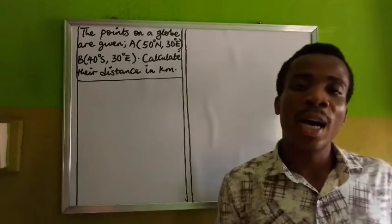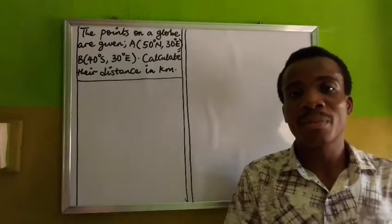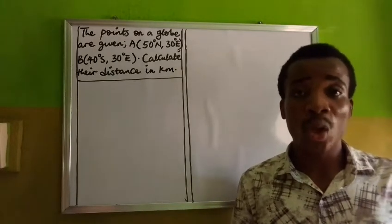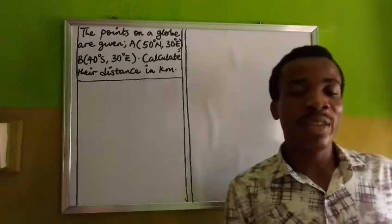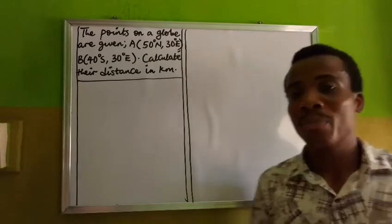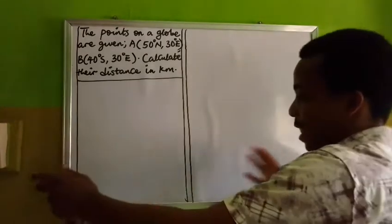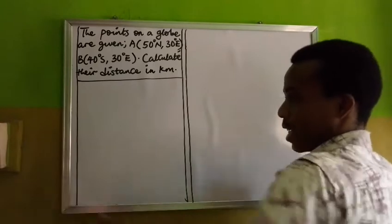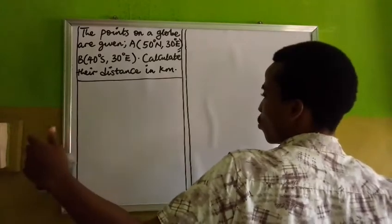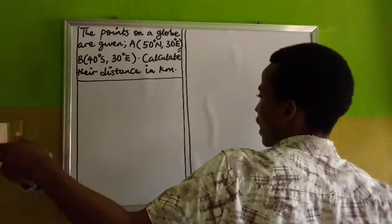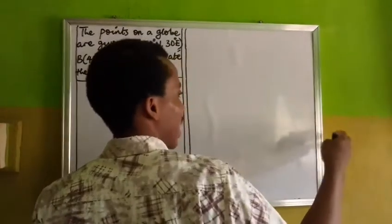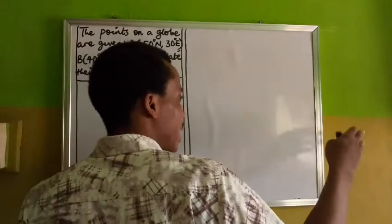Then we have what we call longitude, which are vertical lines. The main longitude is called the Greenwich Meridian. That Greenwich Meridian divides the circle vertically into two parts, which are the western and the eastern sides. Every longitude you see at the left-hand side is a west longitude, while every longitude you see at the right-hand side is an east longitude.